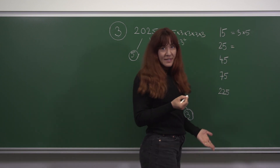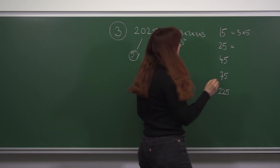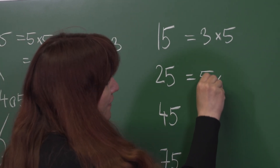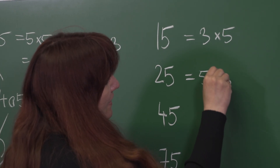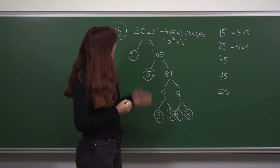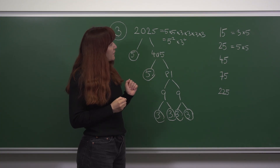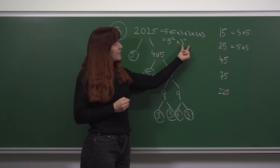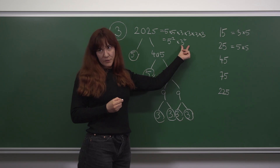We can do the same with the rest. 25 is 5 times 5, so essentially 2025 is 25 times 3 to the 4th. So 25 is a factor.